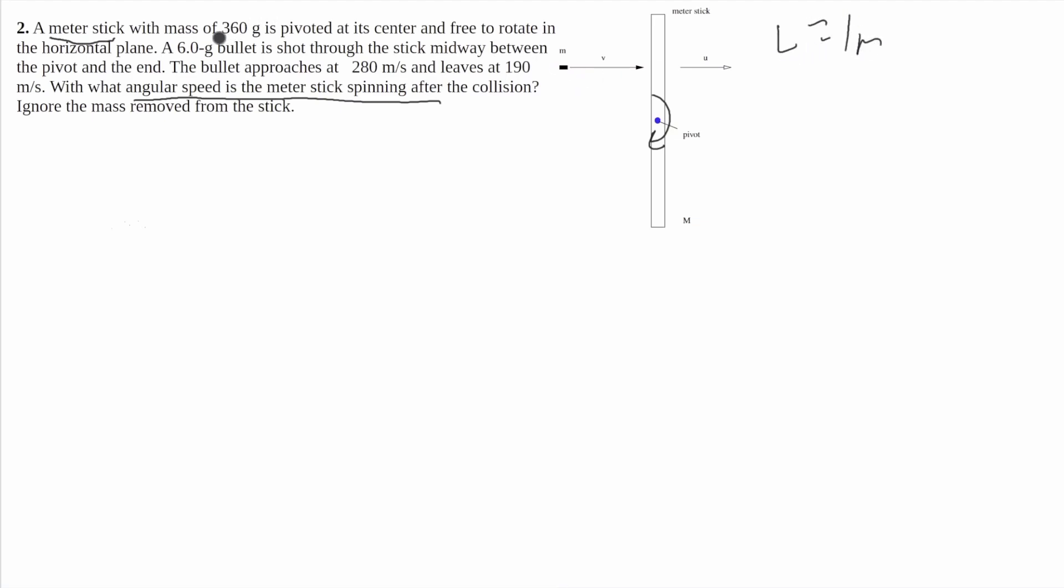It tells us that this meter stick has a mass of 360 grams, so I'll call this ms, it's going to be 0.36 kilograms. It tells us that the mass of the bullet is 6 grams, so I'll call this mb is equal to 0.006 kilograms. It tells us that the bullet's initial velocity is 280 meters per second, so I'll call it v-initial, which will be equal to 280 meters per second. It tells us that the final velocity is 190 meters per second, so v-final will be 290 meters per second.